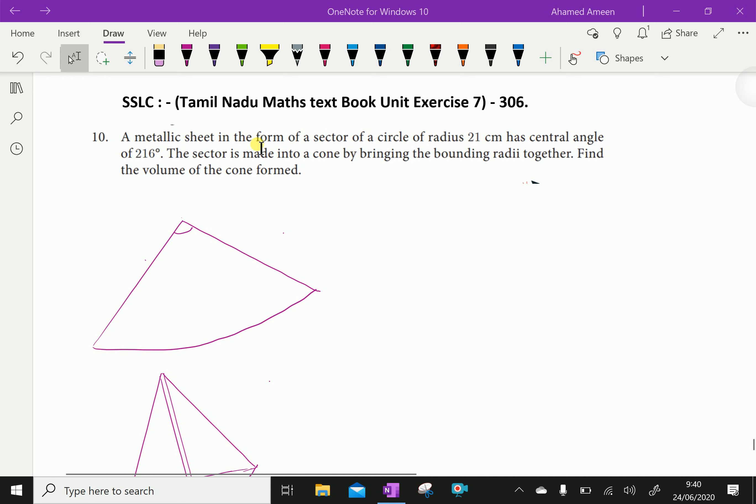A metallic sheet in the form of a sector of a circle of radius 21 cm has central angle of 216 degrees. The sector is made into a cone by bringing the bounding radii together. Find the volume of the cone formed.